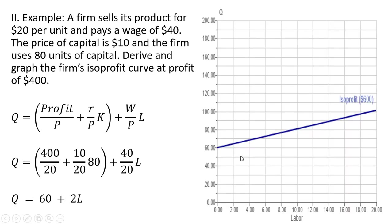And this is what the graph looks like: a vertical intercept of 60 and a slope of 2. So if L is 20, Q will equal 100 — 2 times 20 is 40 plus 60 is 100. I hope you found this video helpful. Thank you.